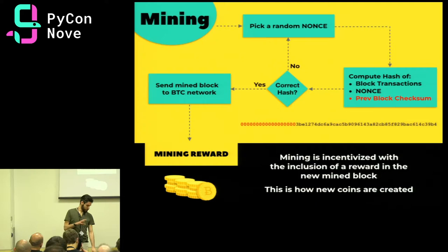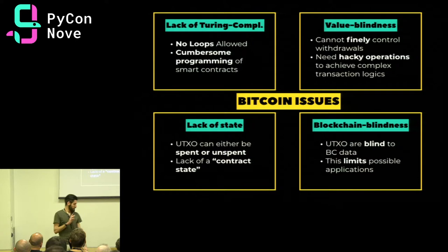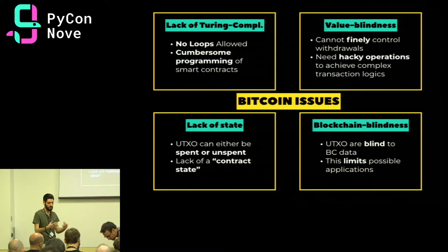This is all fine and well — we have a distributed, immutable ledger across untrusted parties, with a cryptographic protocol ensuring we can send money in a trusted way. But there are some issues. Bitcoin was designed just to send transactions with some digital tokens; it was designed as a payment system. It lacks a complete, Turing-complete scripting language, so one cannot implement any kind of logic on top of the blockchain.